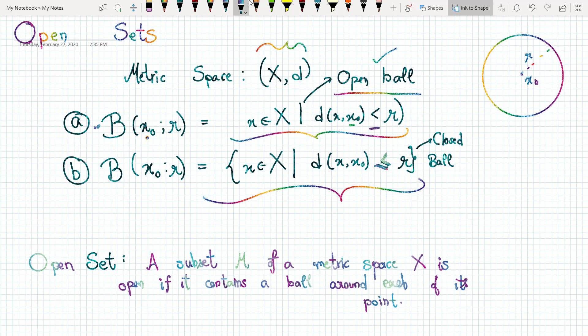Intuitively, you can think of a disc in the two-dimensional case. In the R² setting, the disc is a closed ball. If you include all the points inside the disc along with the boundary points, it's a closed ball.